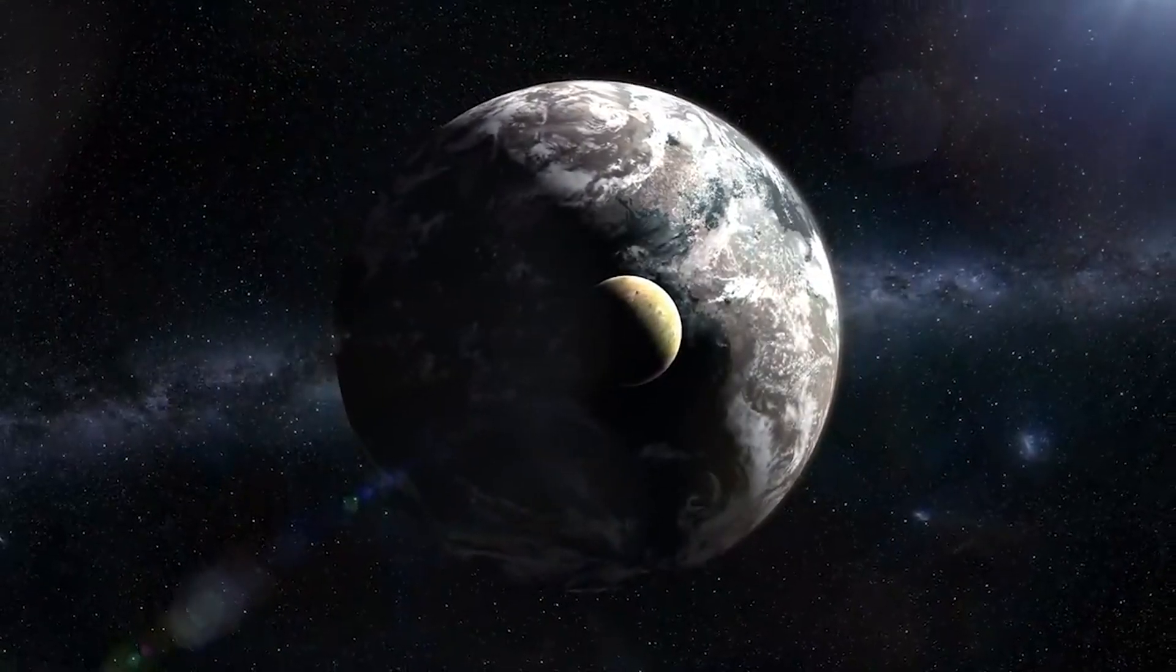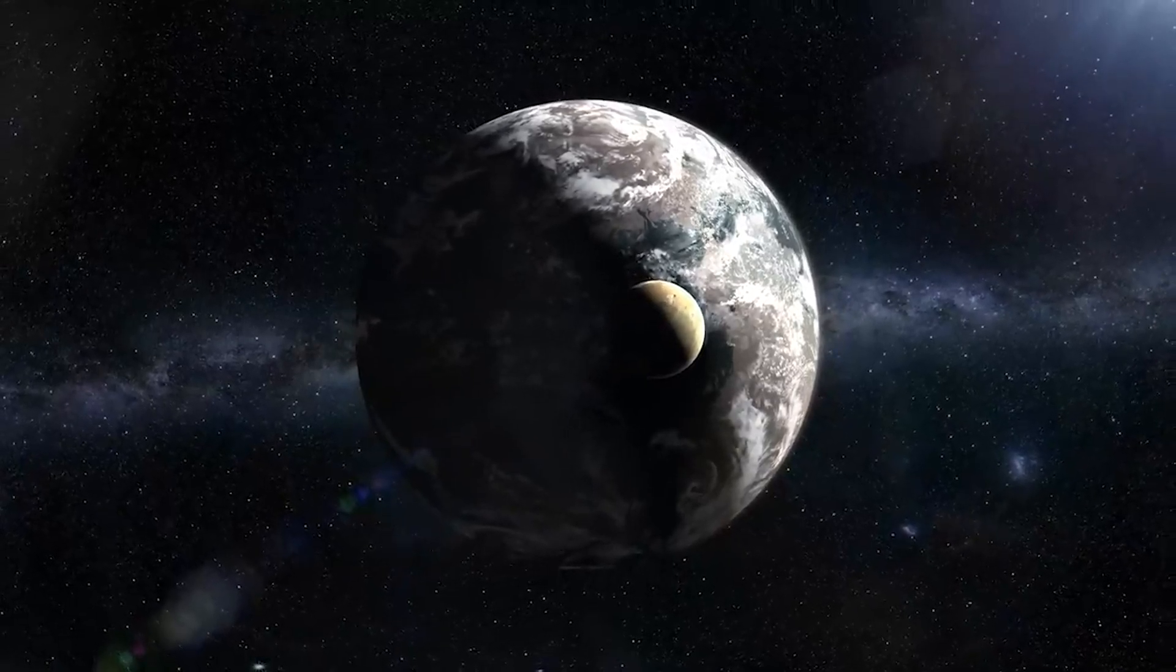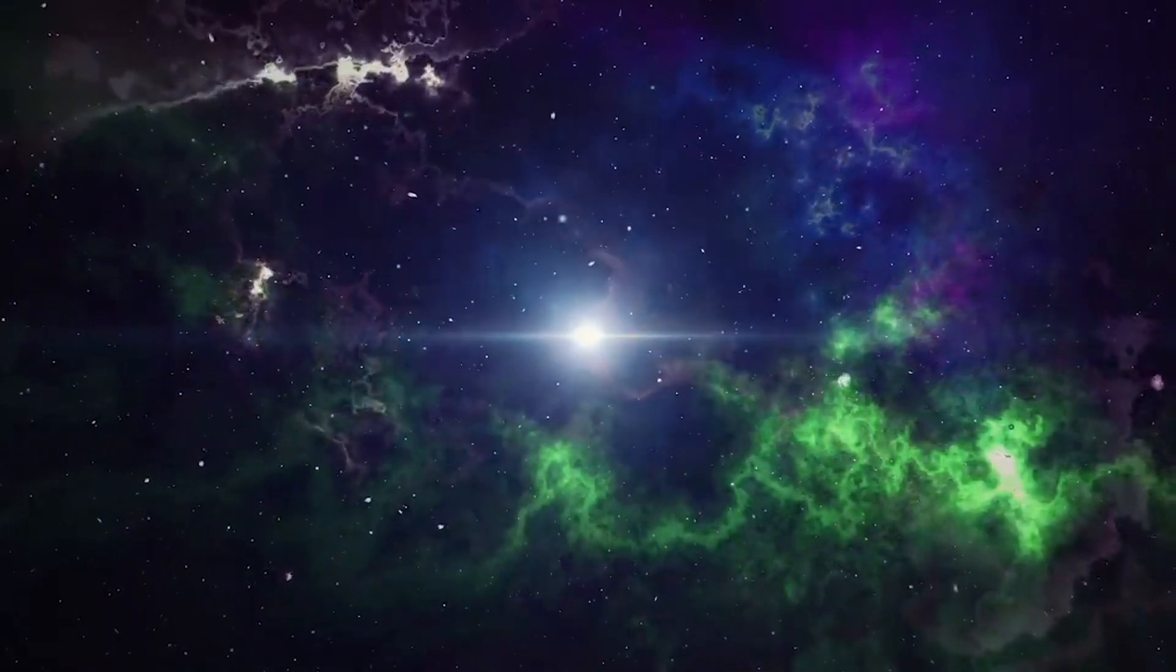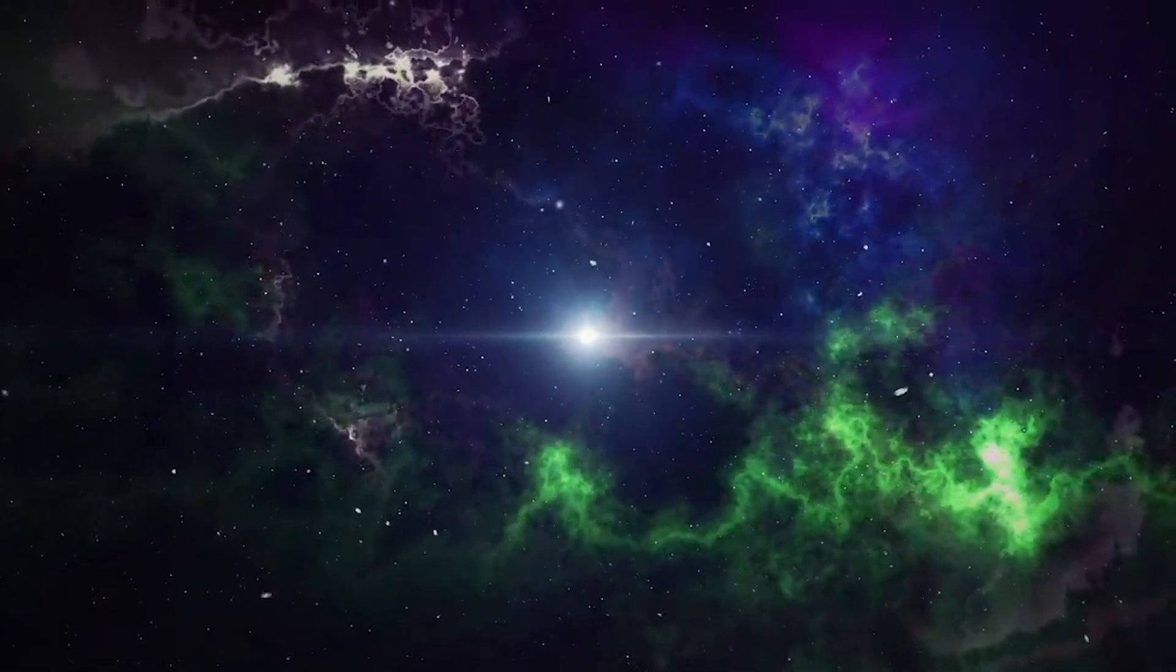When Earth is closer to the sun during its orbit, it moves faster, causing the northern and southern hemispheres to experience summer. When Earth is farther from the sun, it moves slower, resulting in winter.